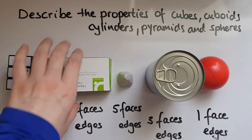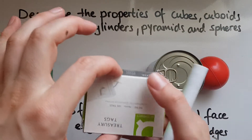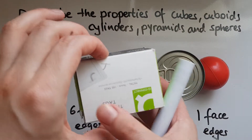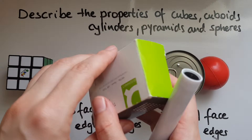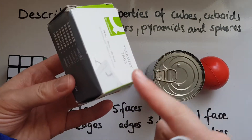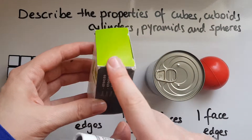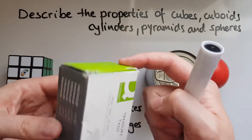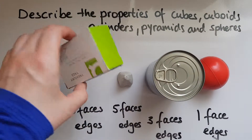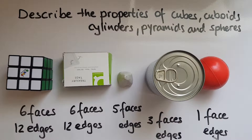Is it the same for a cuboid? Counting: one, two, three, four, five, six, seven, eight, nine, ten, eleven, twelve. So it is the same for a cuboid as well — 12 edges.